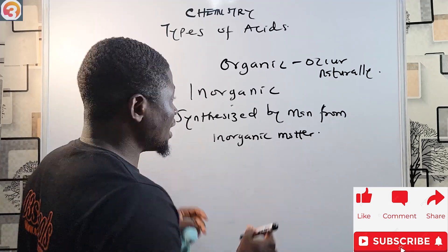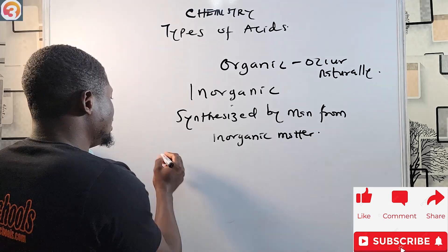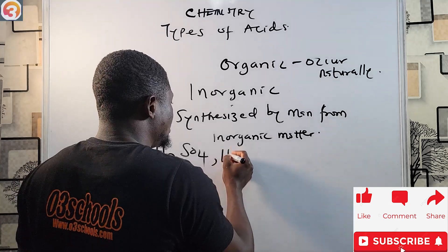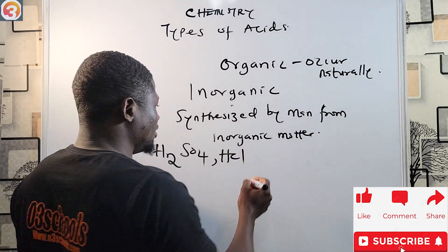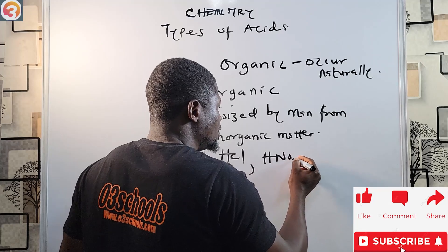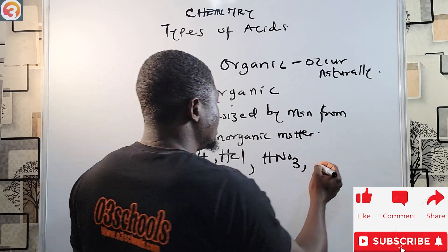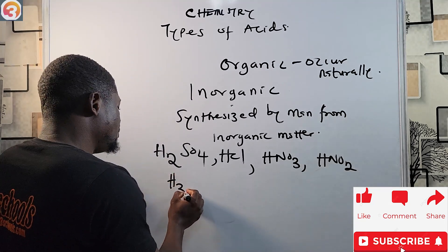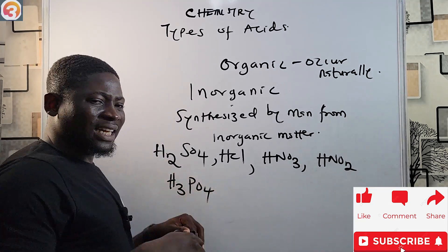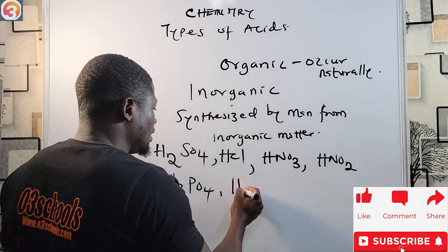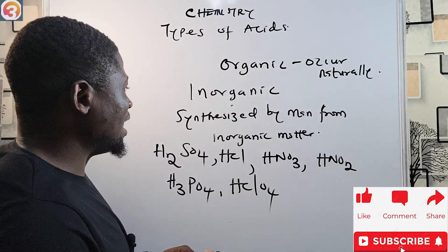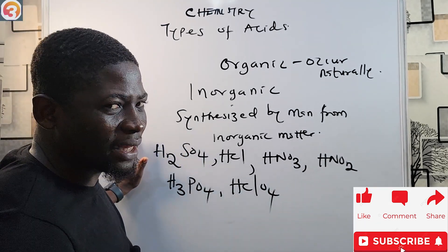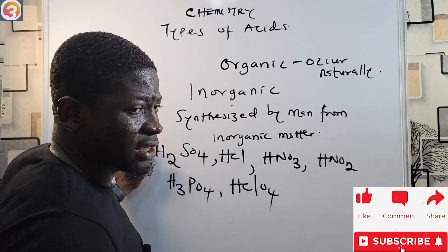Examples of inorganic acids include H₂SO₄ (sulfuric acid), HCl (hydrochloric acid), HNO₃, HNO₂, H₃PO₄, and HClO₄. All of these are synthesized by man from inorganic matter.